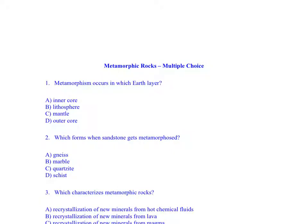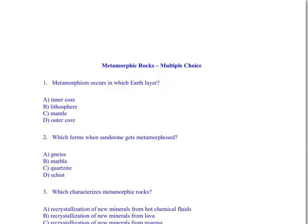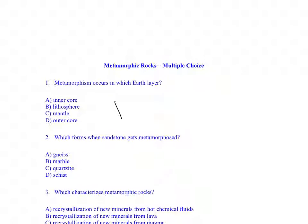Metamorphism occurs in which earth layer? Well, it's only going to occur in the top layer, so the answer to this question is B, because the top layer is the lithosphere. Which forms when sandstone gets metamorphosed? Sandstone is a sedimentary rock; when it gets metamorphosed, it becomes quartzite.